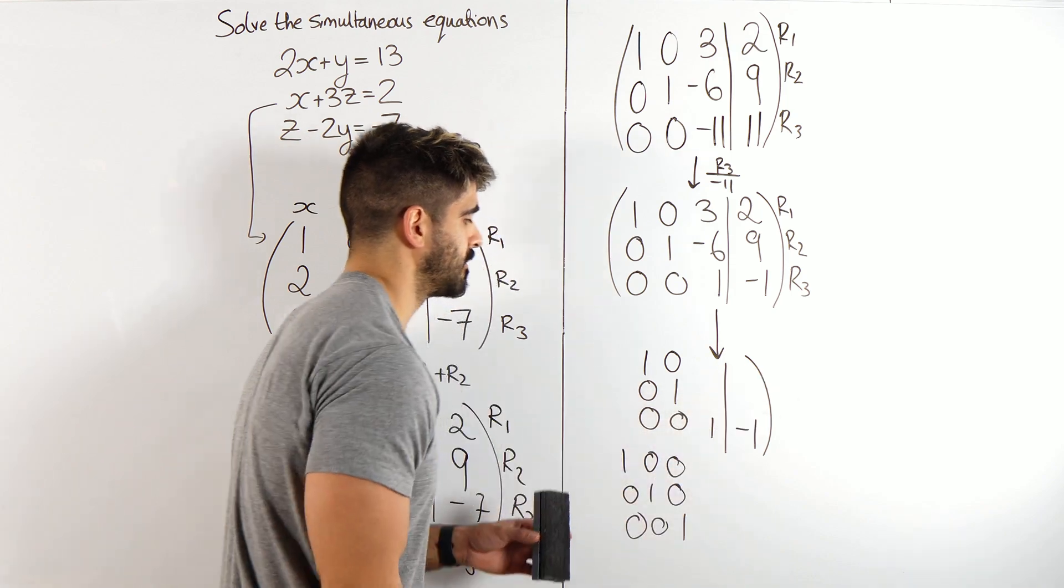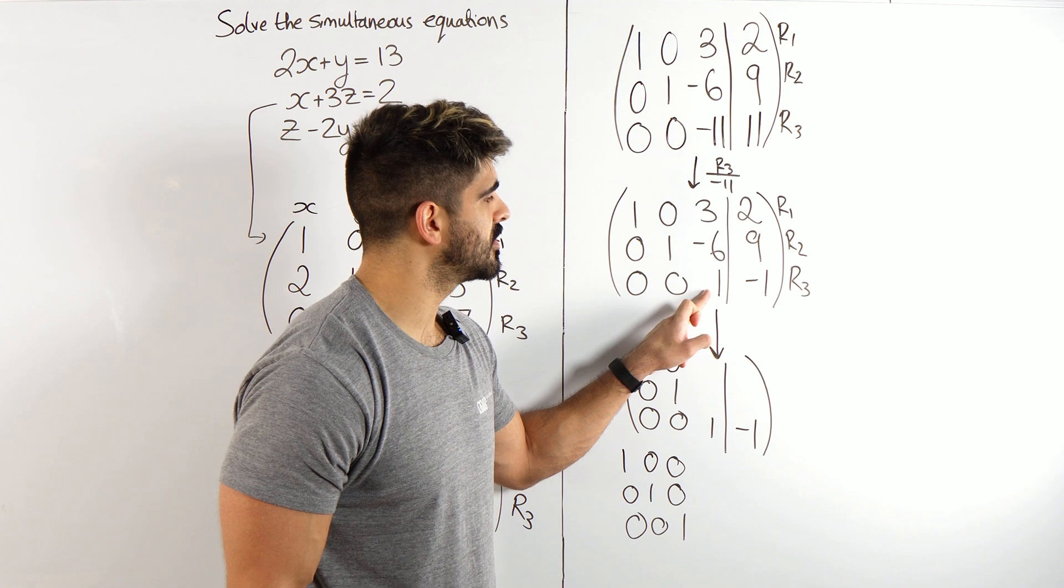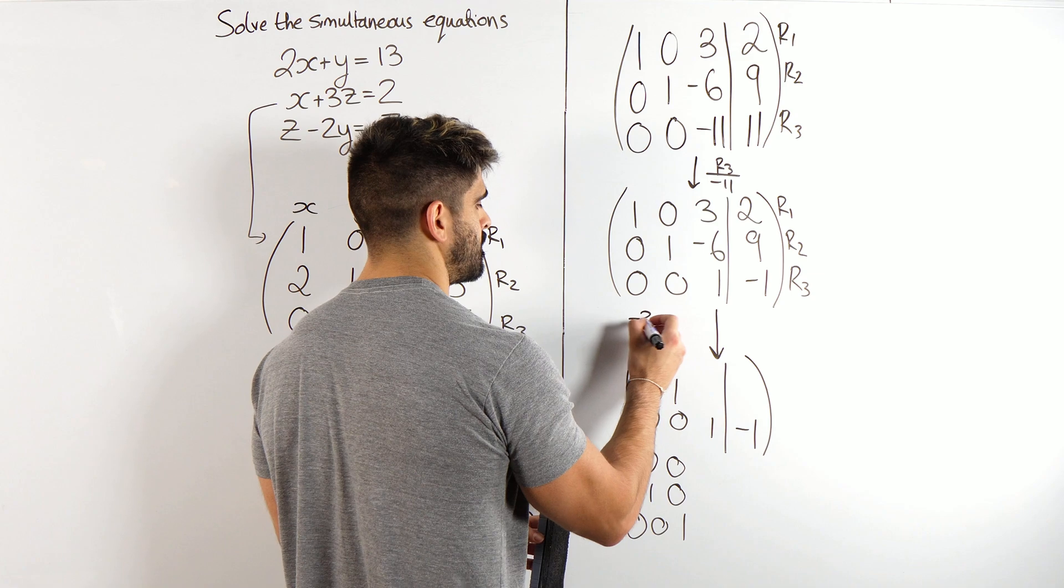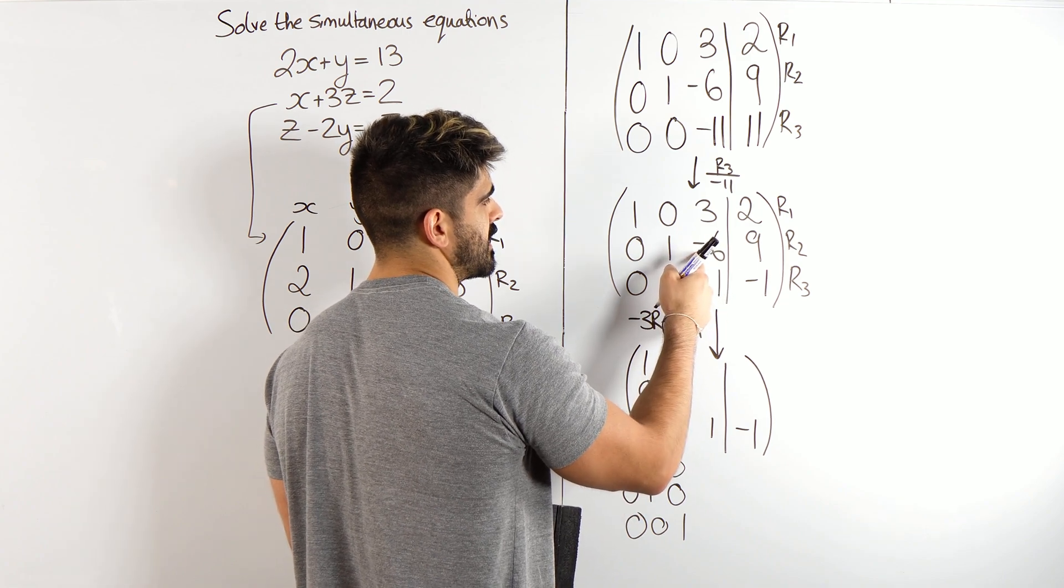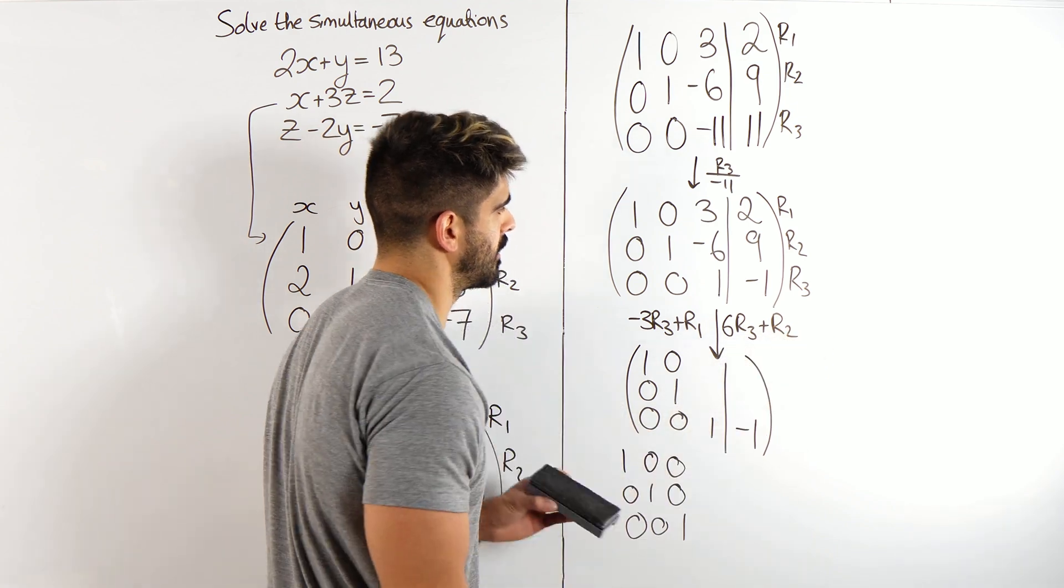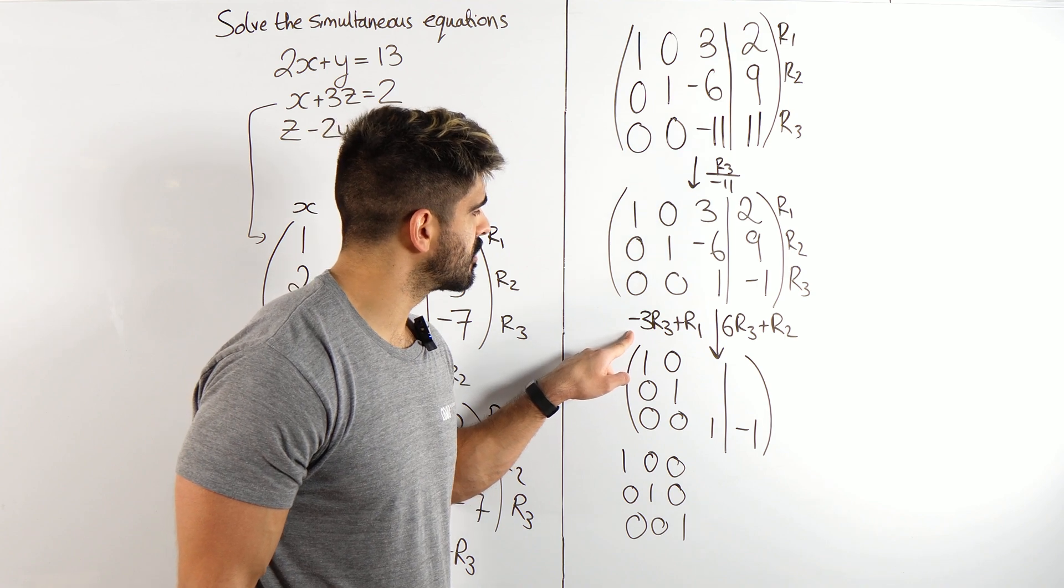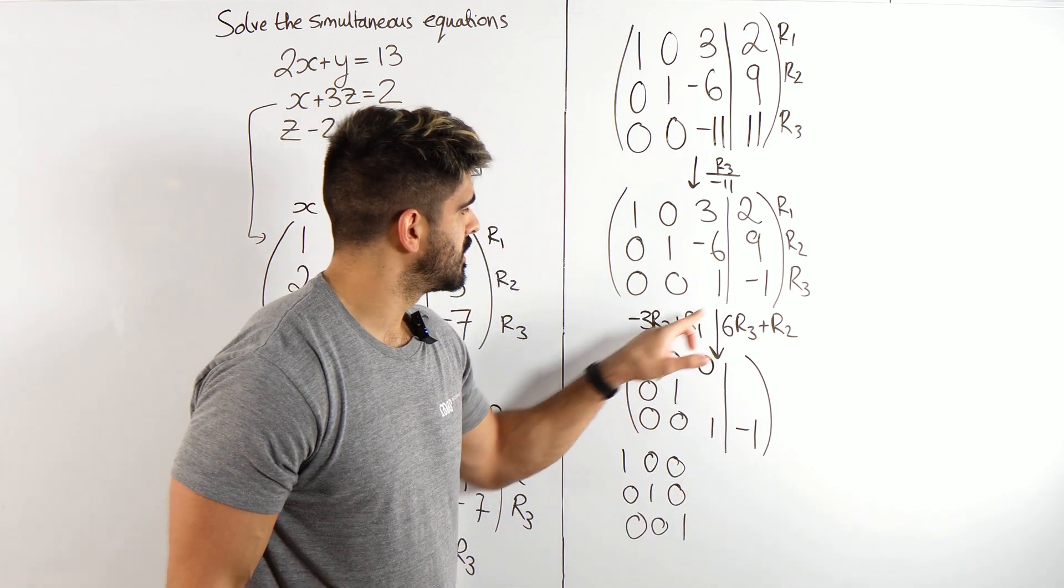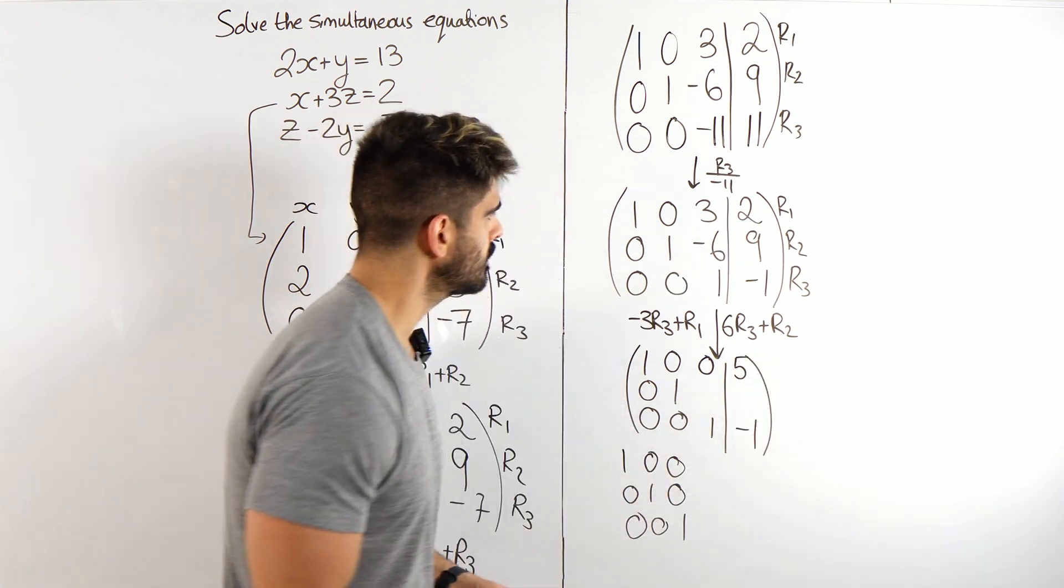So what do I need to do? I want to make that a 0. 1 times minus 3 is minus 3, plus 3 is 0. So I'm going to times row 3 by minus 3, then I'm adding it to row 1. What about this one? I need to times this by 6, then add it to this to make it 0. So I'm doing row 3 times 6, then adding it to row 2. How is that going to look? Let's do this one first. 1 times minus 3 is minus 3, minus 3, plus 3, 0. Minus 1 times minus 3 is positive 3, positive 3, plus 2, 5.